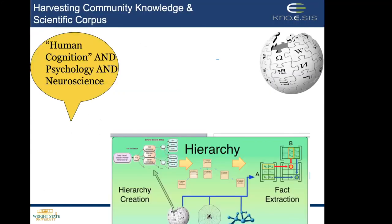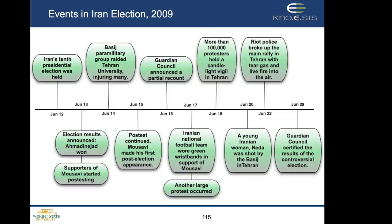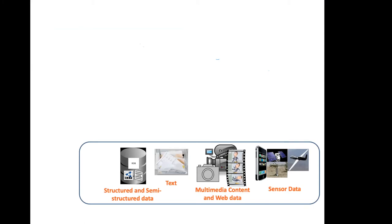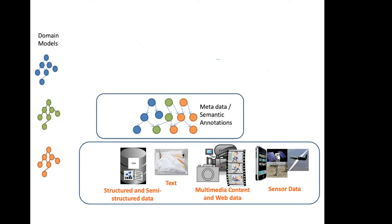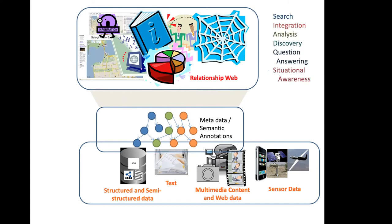We deal with all kinds of data — structured and semi-structured data, text, multimedia content, and sensor data. They're very hard to understand because computational processing for video, text, and images are all very different. If you use a knowledge graph, ontology, or domain model, it becomes easier to talk about the same object at a high level of abstraction rather than how it's depicted in each data format. From that, we develop applications for search, integration, analysis, discovery, question answering, and situation awareness.